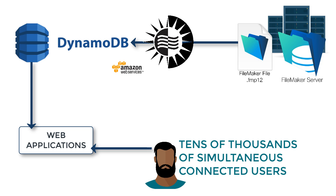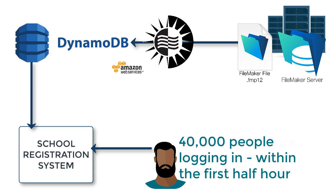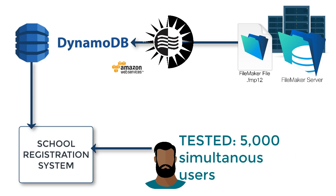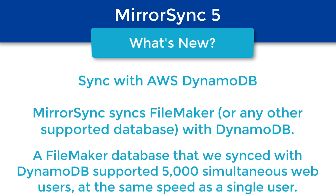We used this in a real-life case where it was a school registration system, and there were going to be 40,000 people logging into this database within 30 minutes of it opening. For this client, we set up a formalized test process where they scripted the typical operations a user would perform, then contracted with a benchmarking company to simulate that process as if 5,000 simultaneous people were doing it at the same time. What they found is that using their web application, the speed for 5,000 people was exactly the same as for one user — essentially no performance degradation no matter what you threw at it.